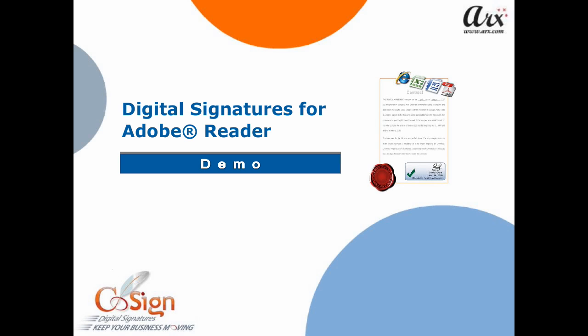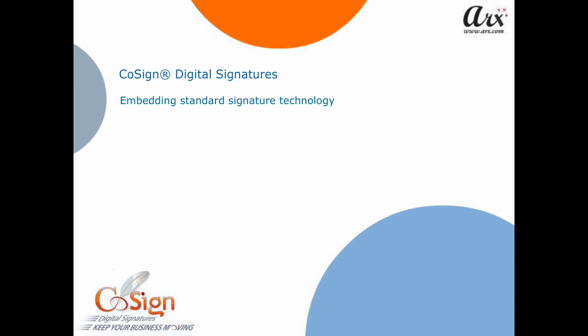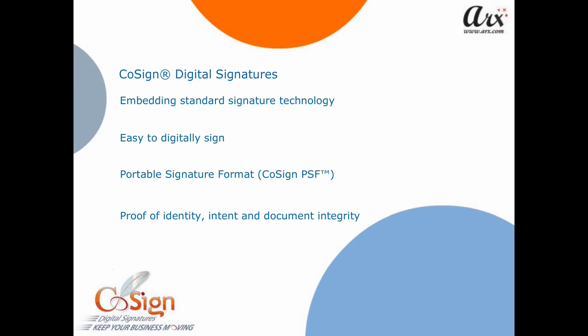Welcome to the CoSign Digital Signature Demo for Adobe Reader. By embedding standard signature technology directly into mainstream business applications, CoSign makes it easy to digitally sign transactions, documents, and records. CoSign creates a portable signature format that allows anyone to seamlessly retain and verify proof of identity, intent, and document integrity without costly, complicated, or proprietary software.